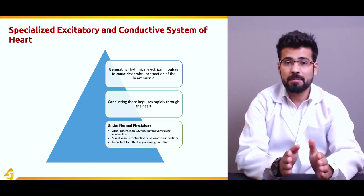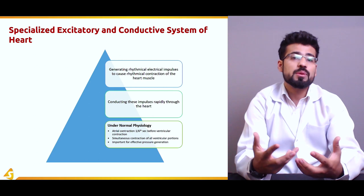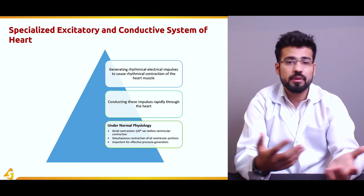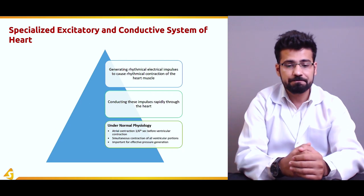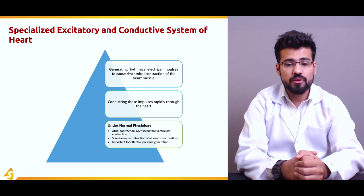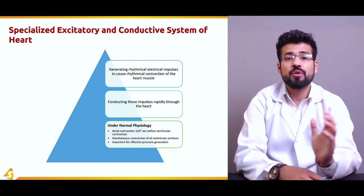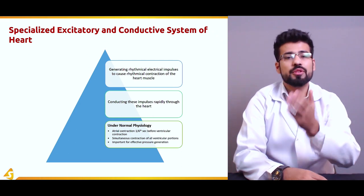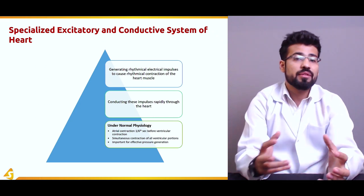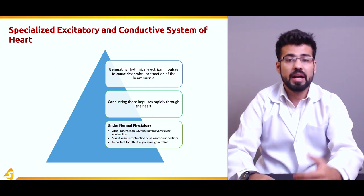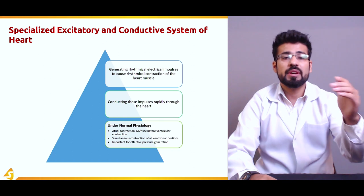This one-sixth of a second allows the blood to completely fill the ventricles. After that time has passed, the ventricles contract, sending blood to the lungs for oxygenation; and the oxygenated blood from the left atrium moves through the ventricle to the peripheral organs of the body. Additionally, there is a simultaneous contraction of all ventricular portions, which is important because ventricles are comparatively bigger than the atria and every portion must contract simultaneously to generate effective pressure for pumping blood to distant organs.